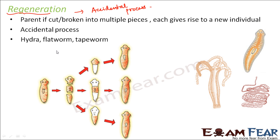Let us look at the example of Planaria. If somebody cuts it into three parts, each of these parts is capable of giving rise to the rest of the organism. The part that has only the head contains specialized cells which can give rise to the bottom part of the body. The middle part of the body has cells which can give rise to the top and bottom parts, and so on. That is how new organisms are formed. Regeneration is essentially a property exhibited by specific cells — whichever organism has those specialized cells can undergo regeneration, and if accidentally cut into pieces, each piece can give rise to a new organism.